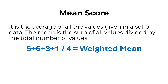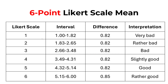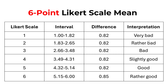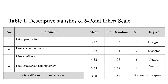Based on the ranges explained, we get the interpretation. For example, a mean from 1.00 to 1.82 corresponds to strongly disagree. You can report this in a table listing the statement number, the statement text, the mean, and the standard deviation, then write the verbal interpretation based on the intervals.